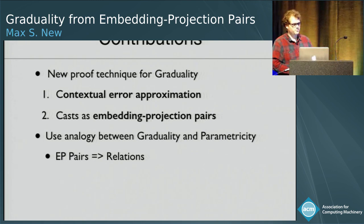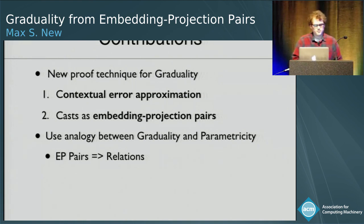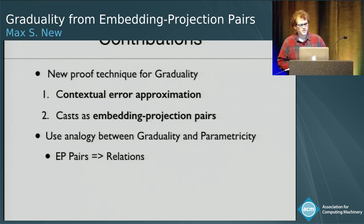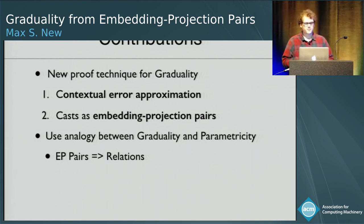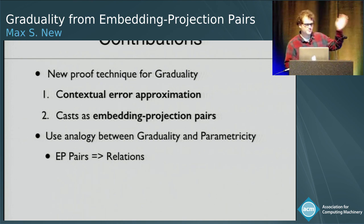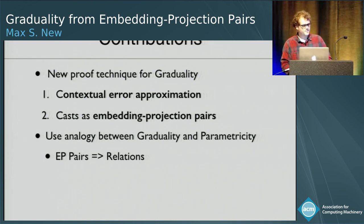So I think maybe we need a new technique for proving graduality, and that's what we present in this paper. The two main components are: instead of simulation, we use the notion of contextual error approximation to define our ordering; and the key idea is that certain casts in the system form what are called embedding projection pairs. There's an analogy between this graduality property and parametricity, where the EP pairs correspond to the relations in the parametricity theorem.